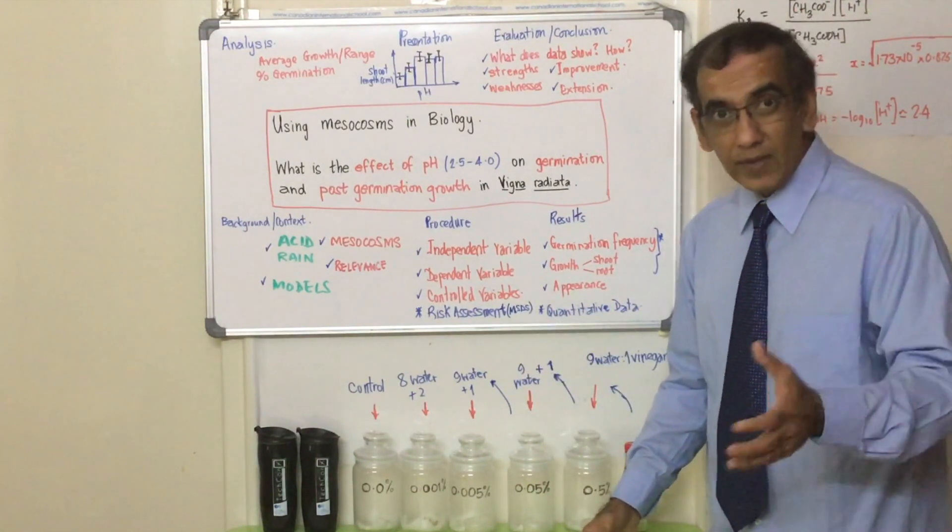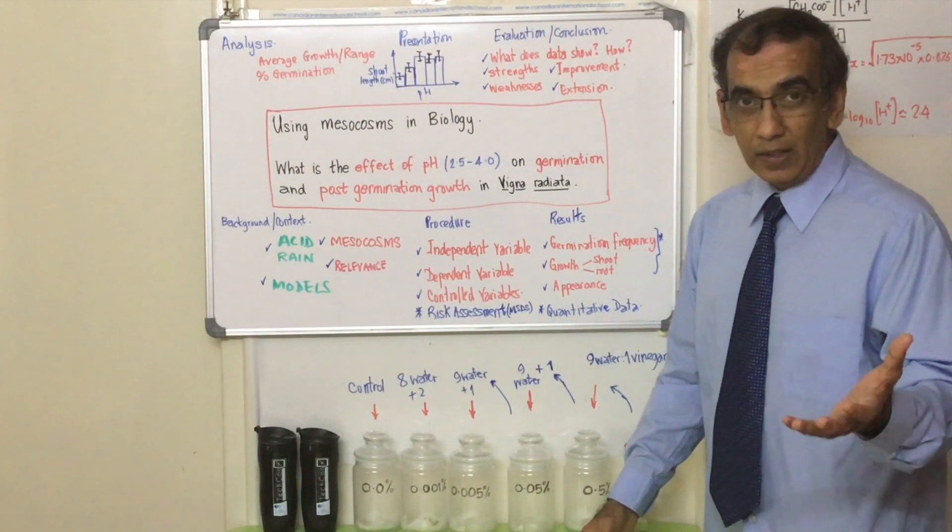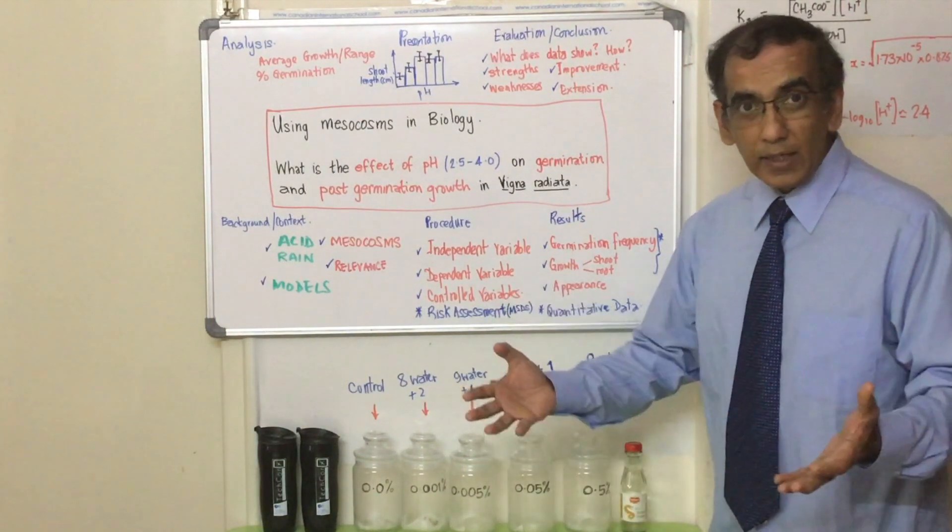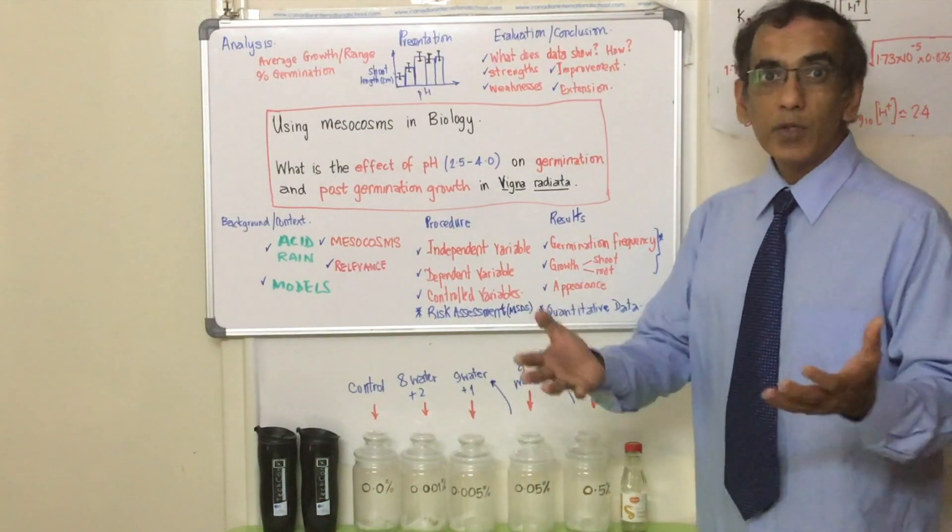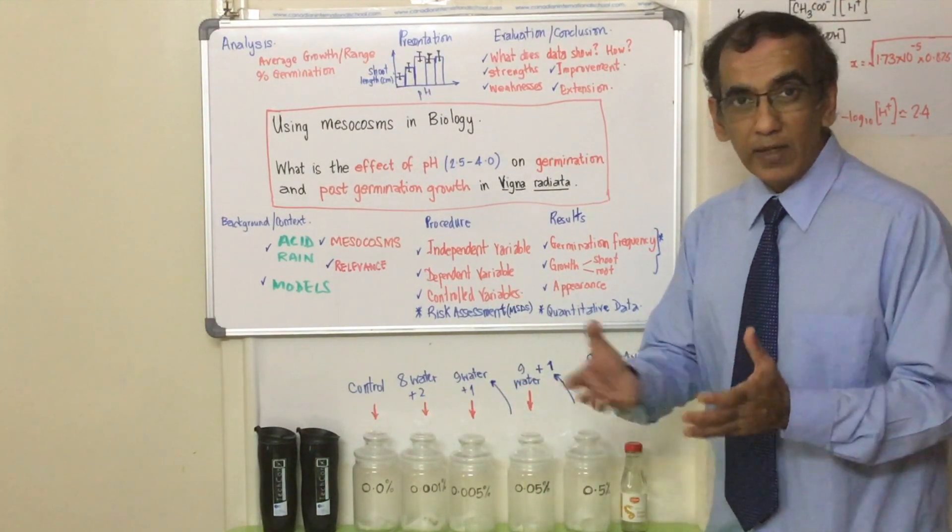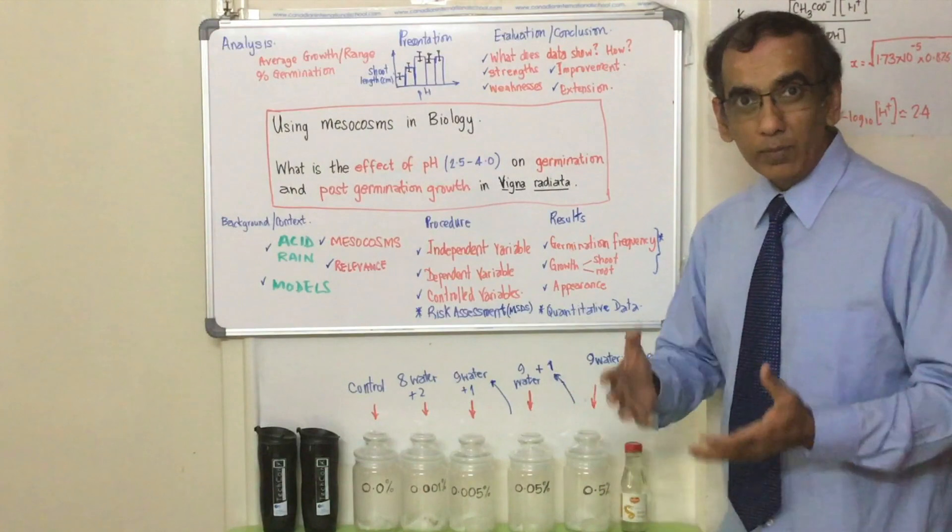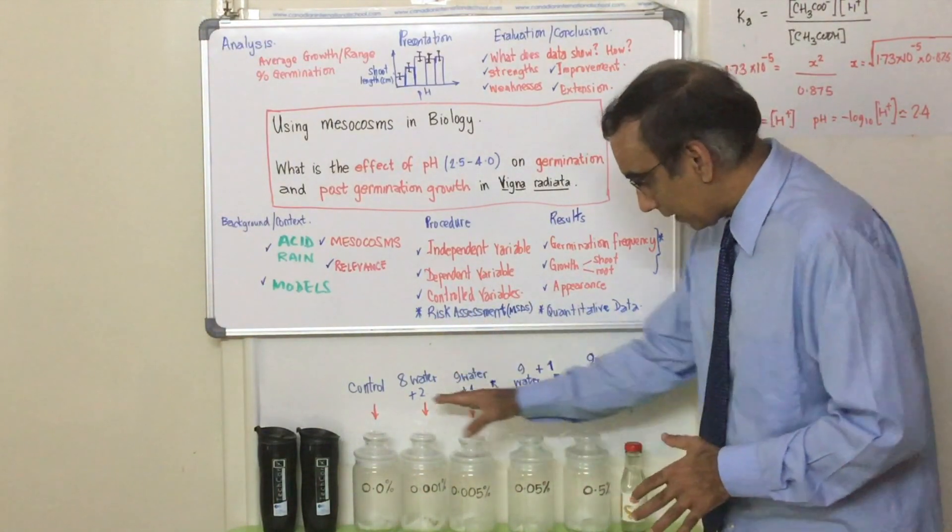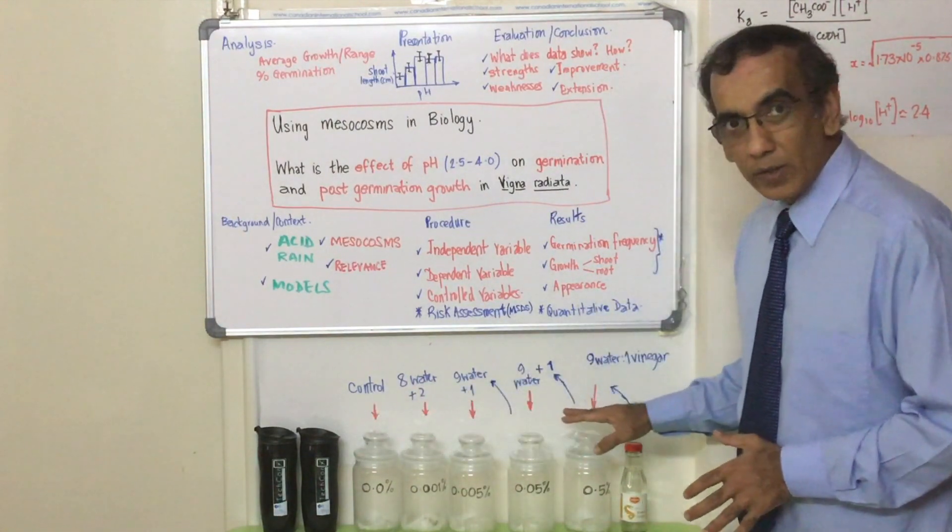Remembering of course that rain itself is inherently acidic because of the presence of carbon dioxide in the atmosphere. Rain without any pollution comes to a pH of around 5.5, 5.6. Acid rain would be a pH of around about 3.5 to 4.5, which is what we're seeking to set up here in our mesocosms.